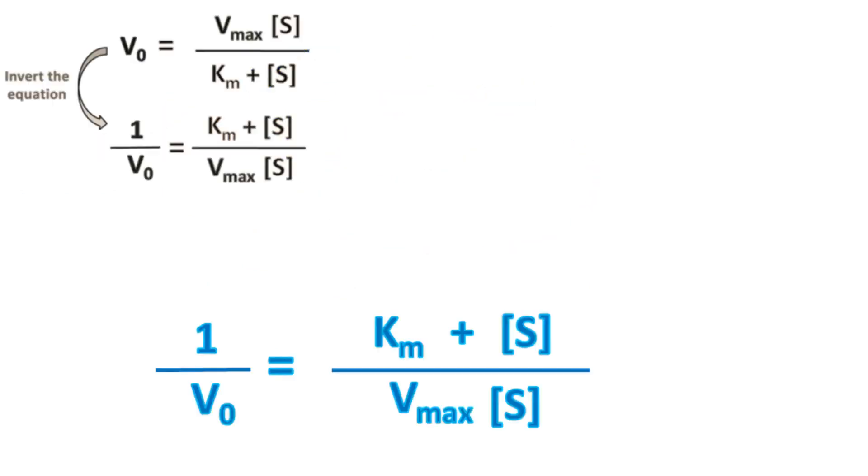Now, multiplying Vmax on both sides, we get Vmax by V0 equals Vmax into bracket Km plus S upon Vmax into S.